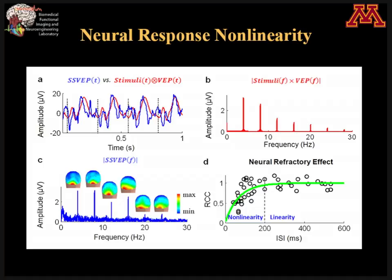According to engineering theory, if the system is linear — or if the brain response is linear, which was our assumption — then what we can get is the SSVEP signal, shown here as the blue signal, which should correspond to the convolution of the stimuli chain with the visual-evoked potential. In a more intuitive way, we can convert this to the frequency domain, where it becomes the multiplication of the stimuli with the VEP power spectrum.